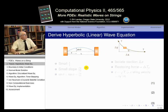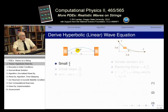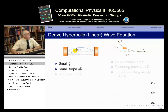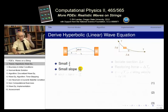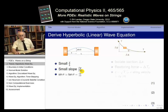On the left we have that same image, smaller now. We're saying Y, the height, is always small compared to length L. If that's true, then the slope at any point — which is ∂Y/∂x — is also small. We use partial derivatives because there's also time dependence. So the slope is small, and we can replace sin(θ), where θ is the angle the string makes with the horizontal, by the slope itself.